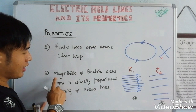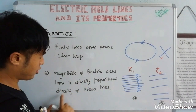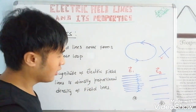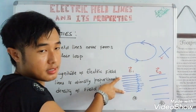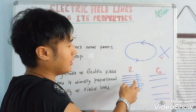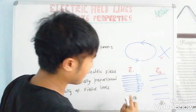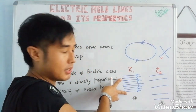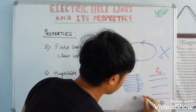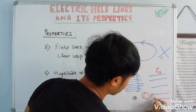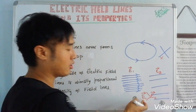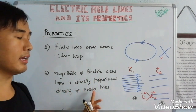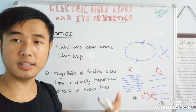Property number six: the magnitude of the electric field is directly proportional to the density of field lines. Where the density of field lines is higher, the electric field strength is also higher. So E1 is greater than E2 when the density at region 1 is greater than at region 2.